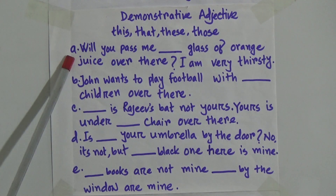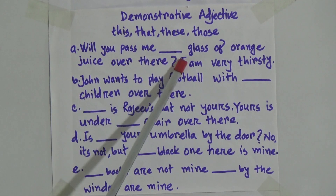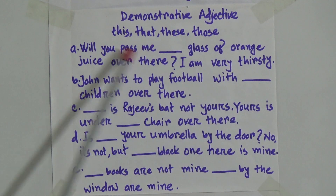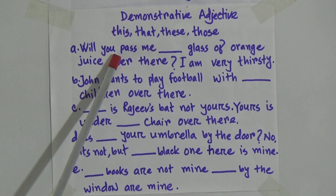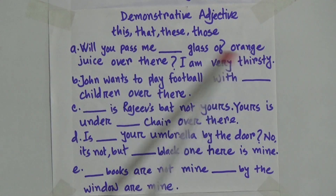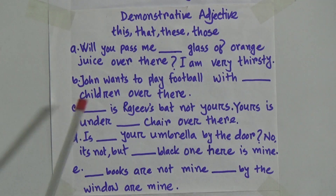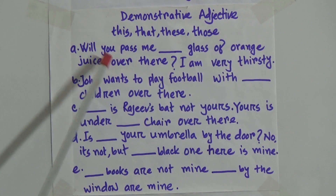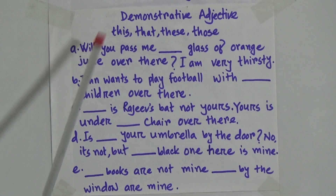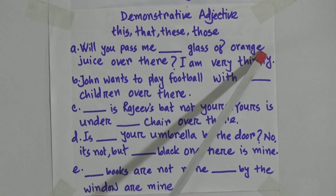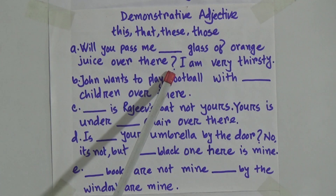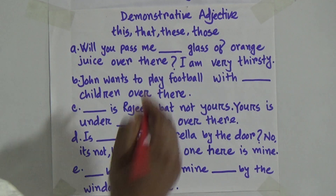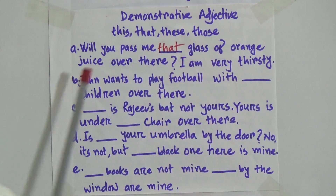So dear students, come to the examples. Number A: will you pass me gap glass of orange juice over there? I am very thirsty. This is a very easy topic — if you go through the whole sentence, it would be very easy for you to answer. Reading again: will you pass me gap glass of orange juice over there? So here it would be: will you pass me that glass of orange juice? That glass of orange.